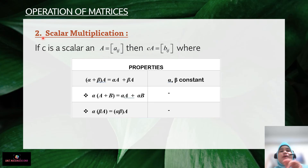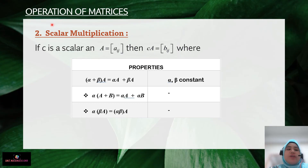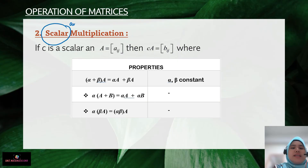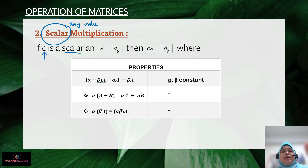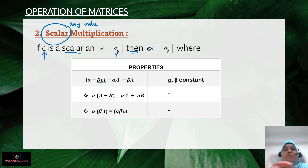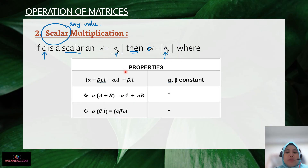Now let's move to the second part of this lecture: scalar multiplication. A scalar is simply any value — any number. If c is a scalar and A is a matrix with element aij, then when you multiply c with matrix A, every element will change because it is multiplied by the scalar value.